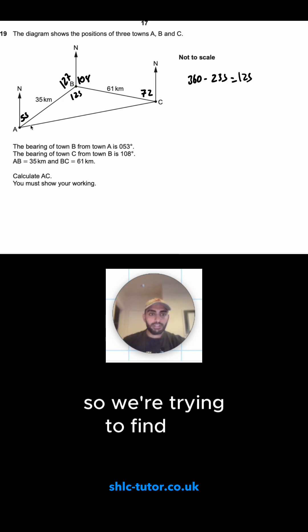Calculate AC. So we're trying to find the length of this. Because we've already gone through the question and we've put some more information on, it makes it a lot easier. What rule could we use here? I can see I've got two sides and an angle between it. That tells me I'm going to be using my cosine rule.